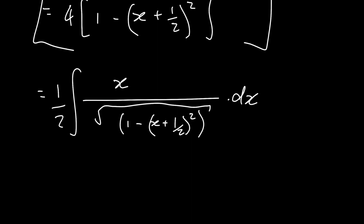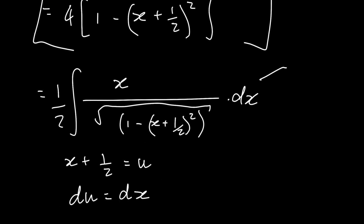The next step is to make a substitution. We're going to let x plus 1 over 2 equal to u. So we have x plus 1 over 2 equals u. The derivative of u in terms of x is just going to be 1, so du equals dx. Now, noticing that when we substitute these back into this integral, we're going to substitute x plus 1 over 2 to be u, and dx to be du.